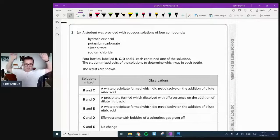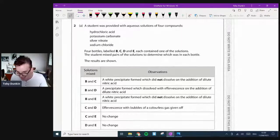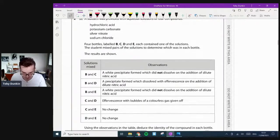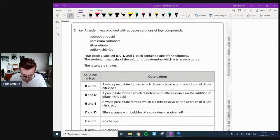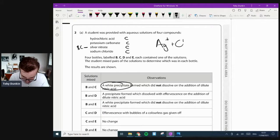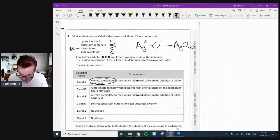Question number two. A student was provided with aqueous solutions of four compounds: hydrochloric acid, potassium carbonate, silver nitrate, and sodium chloride. Four bottles labeled B, C, D, and E, which contained one of the solutions. The student mixed pairs of the solution to determine which was which in the bottle. B and C: white precipitate forms which did not dissolve on the addition of dilute nitric acid. So a white precipitate is going to be, so it's going to be silver nitrate, is either B or C.